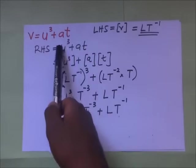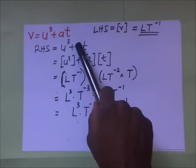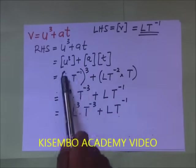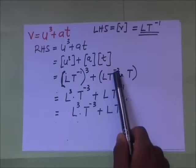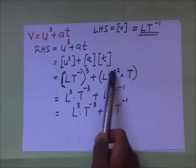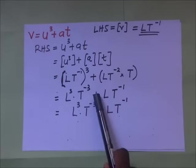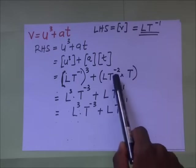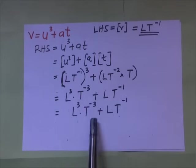The dimensions of the right-hand side: we have the dimensions of U³ plus the dimensions of acceleration times the dimensions of time T. The dimensions of velocity are LT⁻¹, and since U is cubed, this becomes (LT⁻¹)³ = L³T⁻³. The dimensions of acceleration times time are LT⁻² × T = LT⁻¹. So the right-hand side has dimensions L³T⁻³ plus LT⁻¹, which cannot be simplified further.